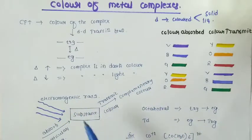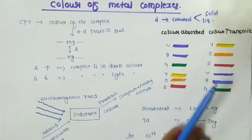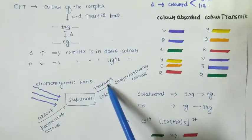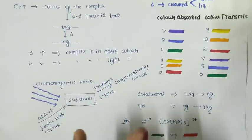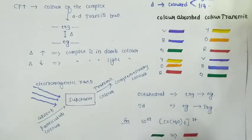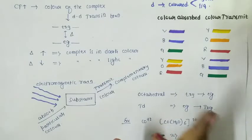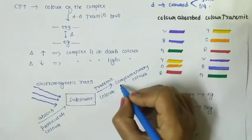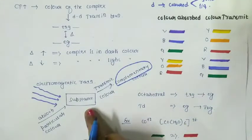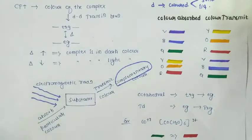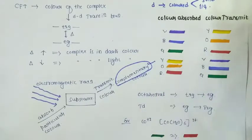When electromagnetic radiation falls on a substance, the substance absorbs a particular color and transmits the complementary color. White light consists of seven colors, so the substance absorbs one particular color and transmits the remaining color, known as the complementary color.